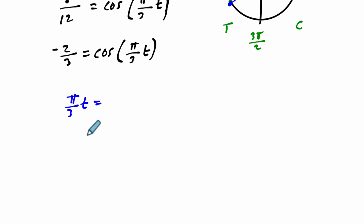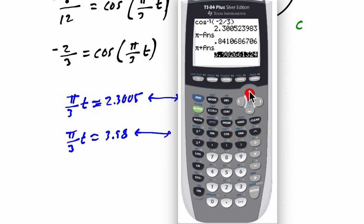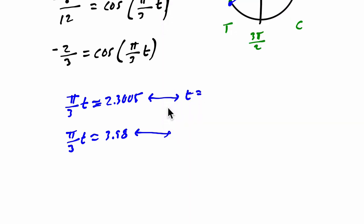The first one is about 2.3005, and the second one is when our input, pi over 3t, is about 3.98. But we want to solve for t. So what does t equal in both cases? This is only true if t equals 2.3005 times 3 divided by pi. So let me go up, grab this number, and then I want to multiply it by 3 and then divide it by pi. And there it is, 2.2. So if t is 2.2.